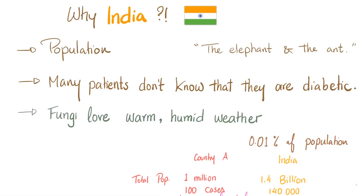Why do we hear about mucormycosis so much in India? This is speculation. Number one, population effect: if mucormycosis affects 0.01% of the population, a country of 1 million gets 100 cases - no one notices. But India, with 1.4 billion people, gets 140,000 cases. Second, many patients don't know they are diabetic, and with a bigger population there are more cases. Third, fungi in general love warm, humid weather. Areas like armpits, the groin, under the breast, and the intergluteal cleft are vulnerable - especially in morbidly obese individuals - because fungi love warm, humid environments.